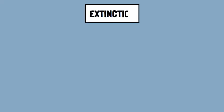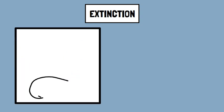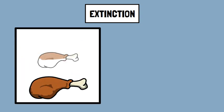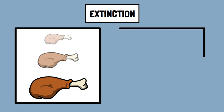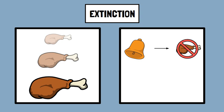Let's look at a few key principles of classical conditioning. Number one: Extinction. Extinction occurs when the conditioned response weakens and eventually disappears when the conditioned stimulus is presented without the unconditioned stimulus. If the bell, which is a conditioned stimulus, no longer predicts food, which is the unconditioned stimulus, the dog may stop salivating in response to the bell.